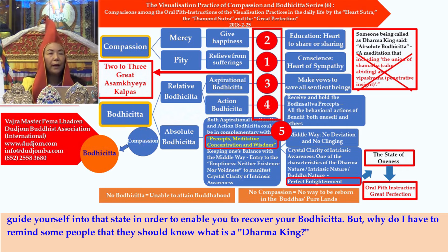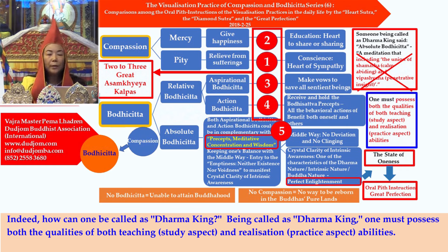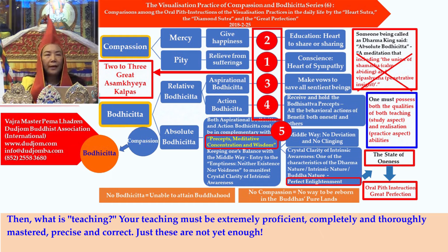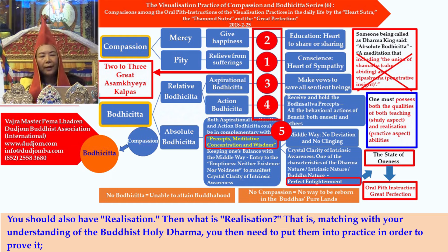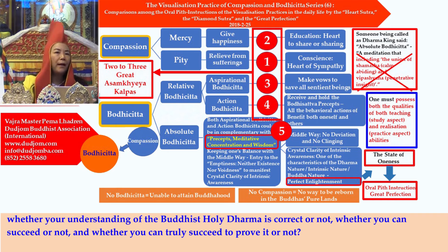Why do I have to remind some people that they should know what a Dharma king is? Being called as Dharma king, one must possess both the qualities of teaching — the study aspect — and realization — the practice aspect. What is teaching? Your teaching must be extremely proficient, completely and thoroughly mastered, precise and correct. Just these are not yet enough — you should also have realization. That is, matching with your understanding of the Buddhist holy dharma, you need to put them into practice in order to prove whether your understanding is correct or not, and whether you can truly succeed.